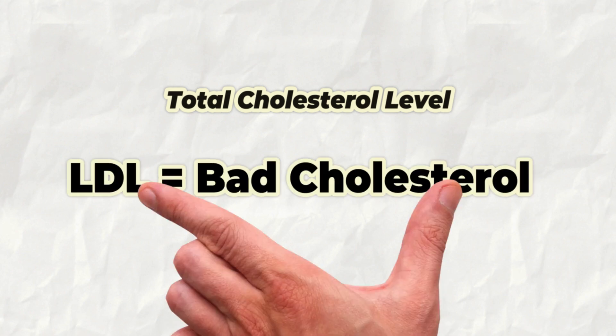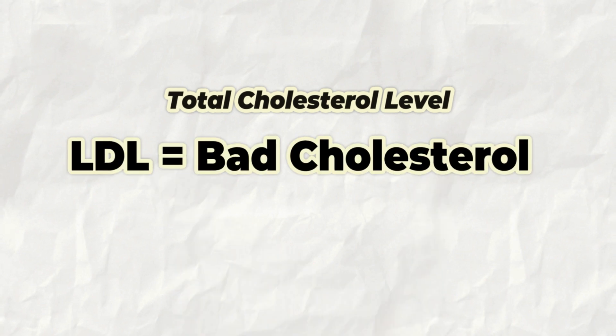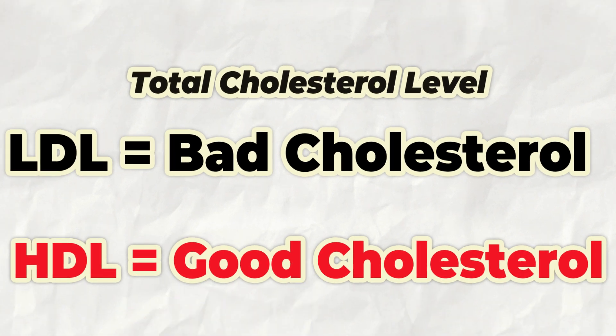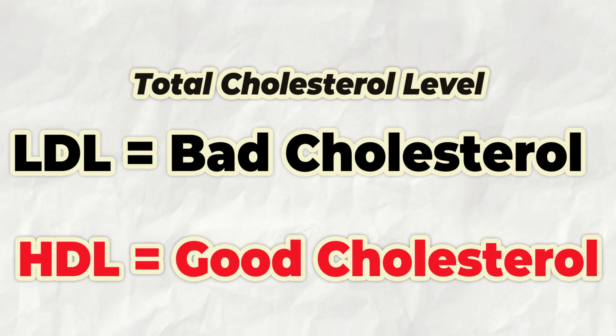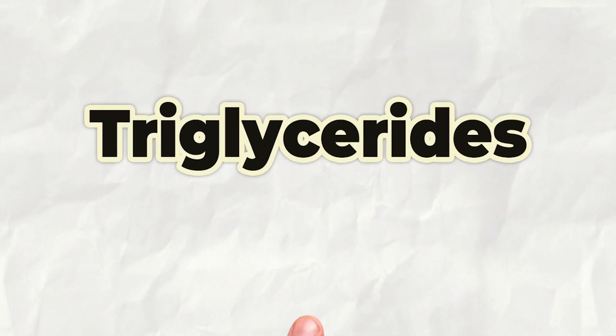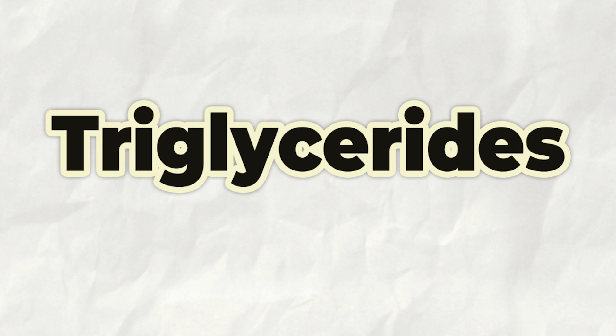There is going to be what is called the total cholesterol level. There is going to be what's called the LDL cholesterol level — low density lipoprotein — oftentimes nicknamed bad cholesterol. There is going to be your HDL, your high density lipoproteins, oftentimes called good cholesterol. And then there are going to be your triglycerides, which are another component, another type of blood lipid, a type of fat within the blood.